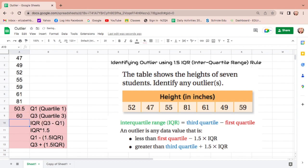To find IQR, or inter-quartile range, subtract Q3, which is 60, and Q1, which is 50.5. This is easy. Equals, Q3 is 60, click, minus, Q1 is 50.5, click, enter.